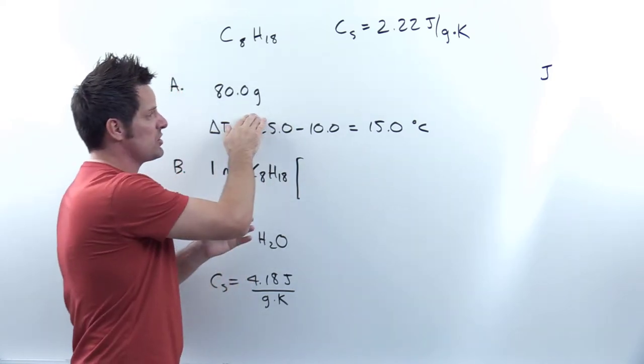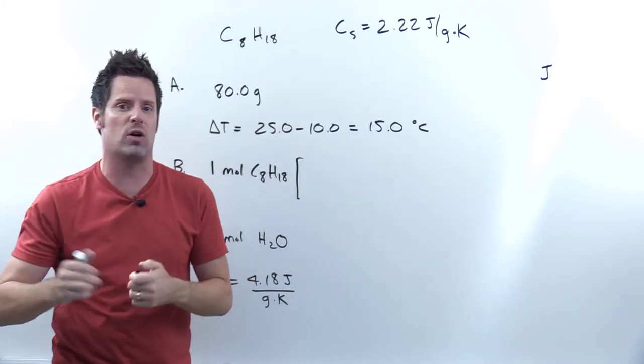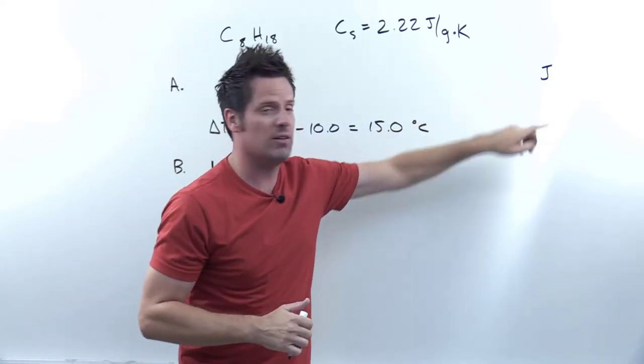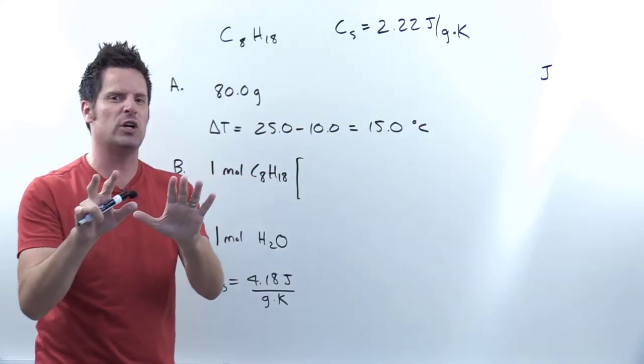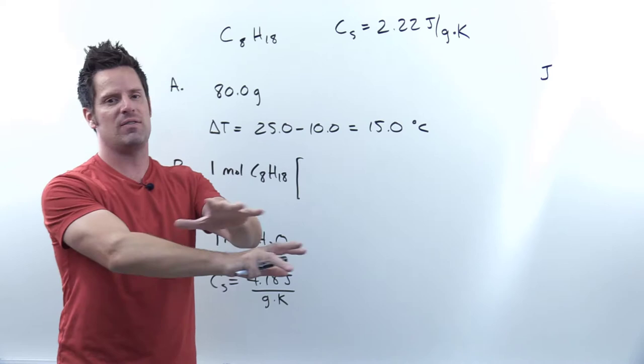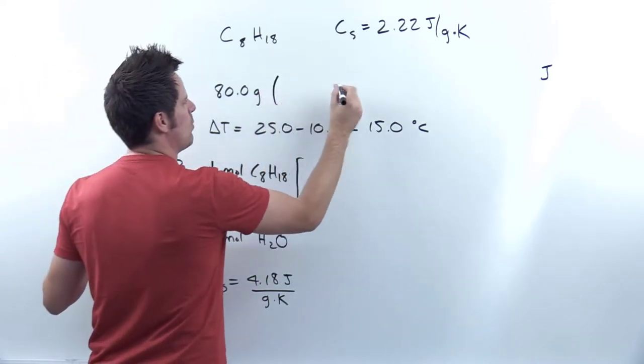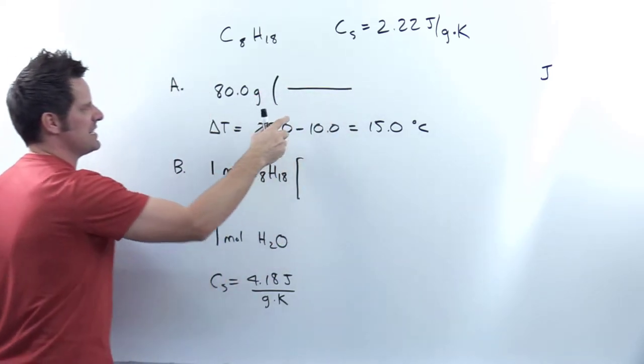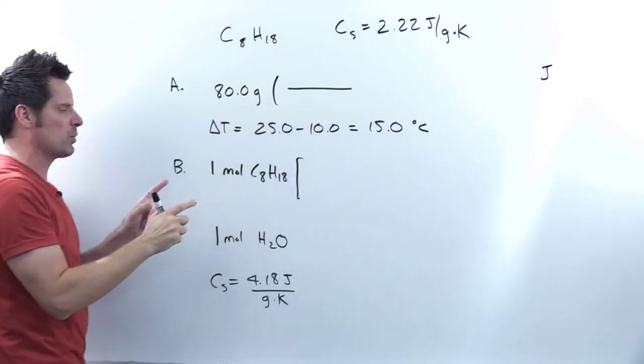In order to cancel out the units I'm starting with and get to our destination units of joules, right? This is all dimensional analysis that I've taught you elsewhere. So I'm going to lay down a set of parentheses. I want to put something in these parentheses that will cancel out my units of grams.